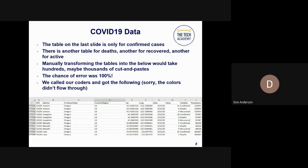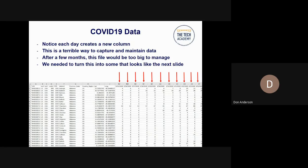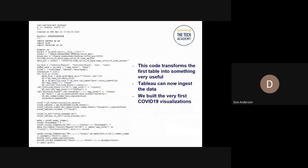The table on the last slide was only for confirmed cases. There was another one for deaths, another for recoveries, and another for active cases. Manually transforming the tables would take hundreds, maybe thousands, of cut and pastes, and the chance of making a mistake was 100%. So we called up our coders and they automated the process. They crossed out the author's name but otherwise this is exactly what they gave us. This code transforms the first table into something very useful, and Tableau can now ingest the data. We started building the very first COVID-19 visualizations.